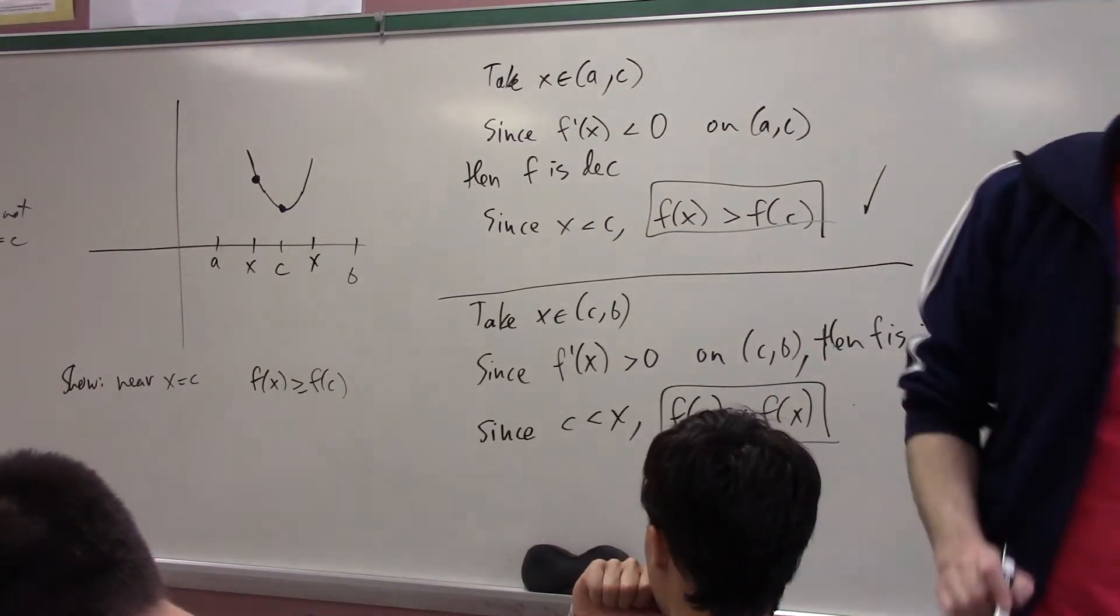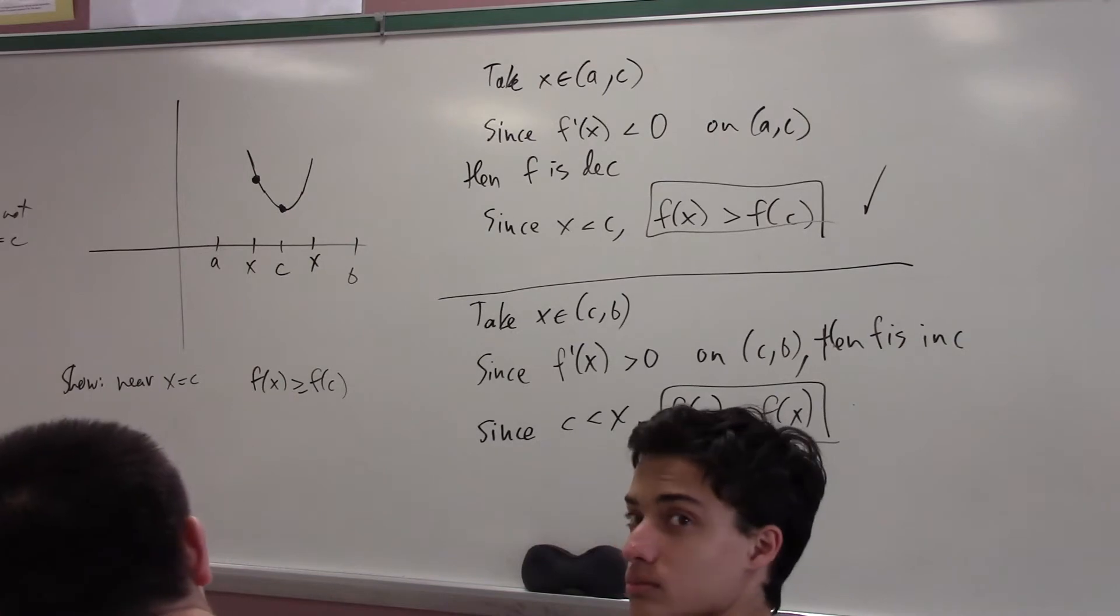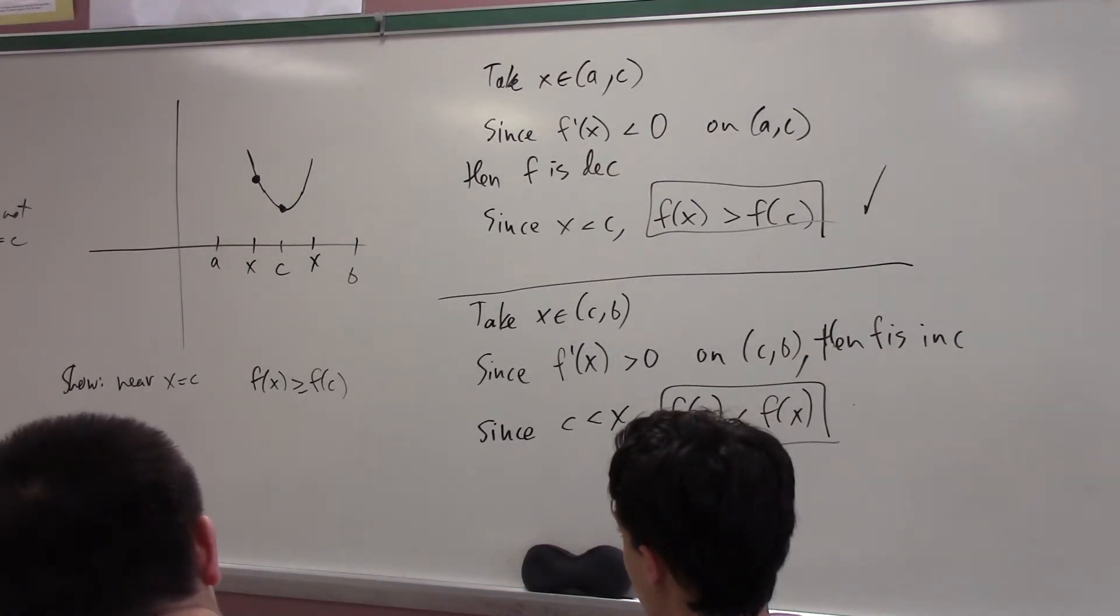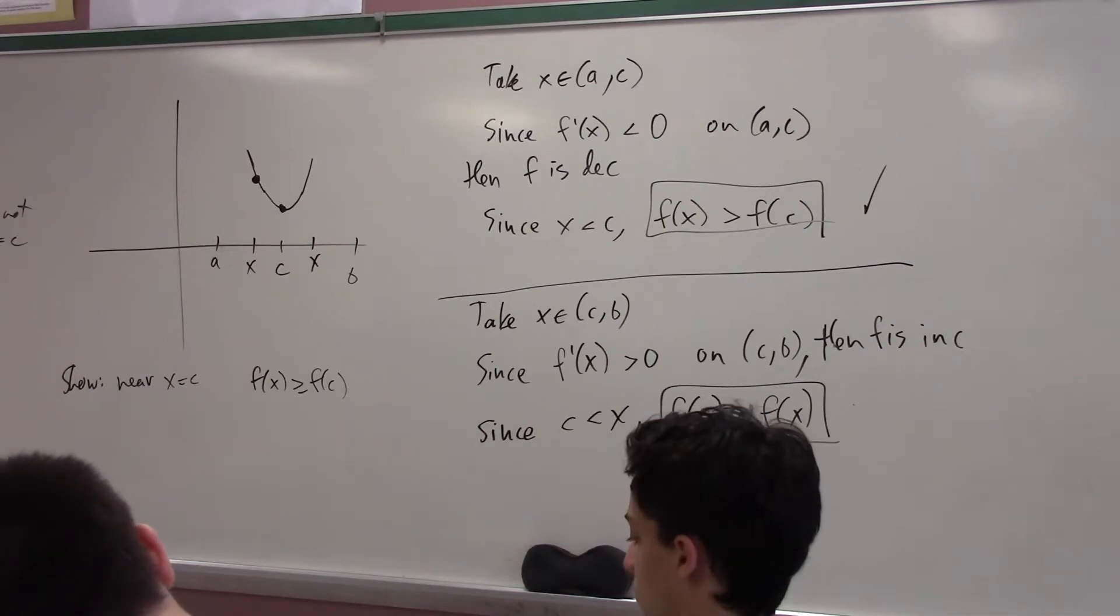And so, in both cases, I have proved that nearby points are larger. And I've proved it because I'm just deep. I mean, basically, this whole theorem says, yo, if you're decreasing to the left and you're increasing to the right, then f of c is the smallest. All right, how are we feeling about this?